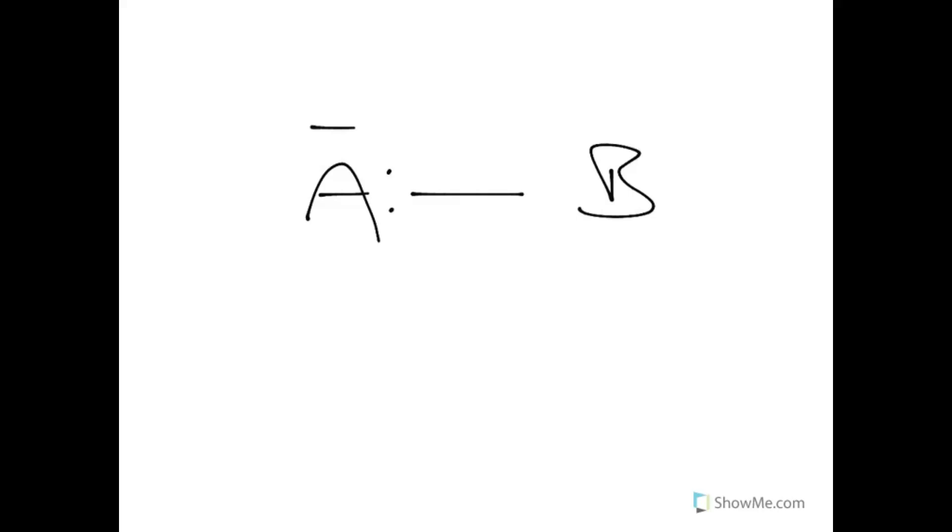So we have A now has a minus charge, and B has a positive charge. Because the bonding electrons are much more strongly attracted to atom A, they spend just about all of their time there. So A is an anion, and B has lost control of its electron. It is now a cation. This is your ionic bond.